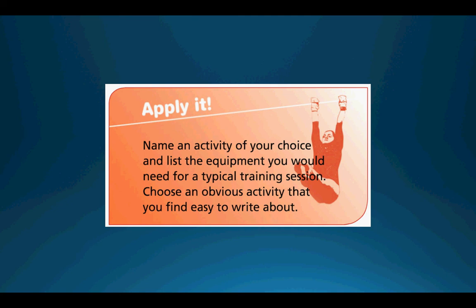Choose an activity you're most familiar with and list the equipment you'd need for a typical training session. Choose an obvious activity such as football, netball or hockey, and write about it. Alternatively, look at the different types of footwear on the internet that you can wear for different sports — how they're made, what shape they are, what they have on the bottom, whether it's a rubber sole, a flat sole, or grooves, and why they would need these things in those sports. At this point in the video, you need to pause it and go away and do that activity.